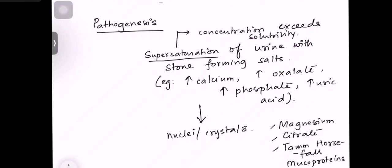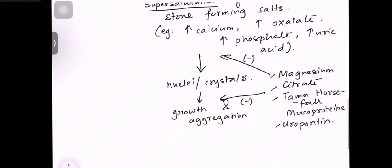You must know that every step is hindered by some factors. For example, stone is formed but crystals formation will not happen. When does it happen? If there is high concentration of magnesium or high concentration of citrate, or presence of TAM horsfall proteins, or presence of uropontin, then that will inhibit the two steps of stone formation and crystal formation. The crystal aggregation is inhibited by non-crystalline components like mucoproteins and carbohydrates.